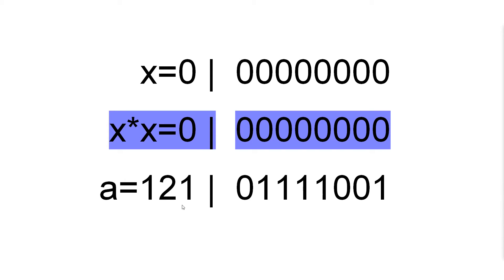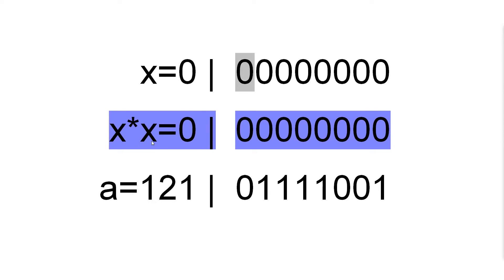So we have our number a — in this case it's 121 — and we want to take the square root of this number. We will call the square root x, and we don't know what it is yet. We will also calculate x times x, or x squared, to check against the number a.